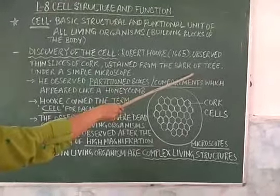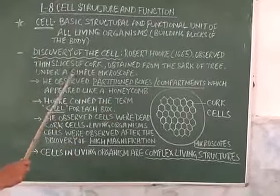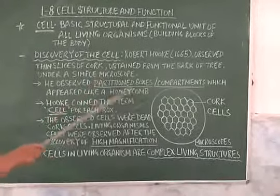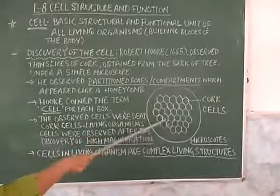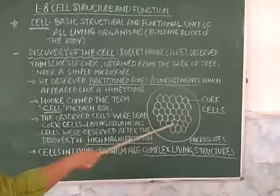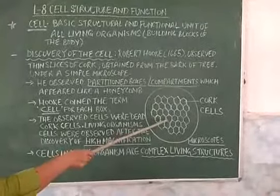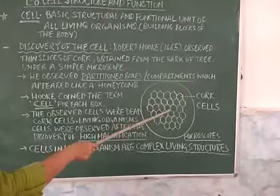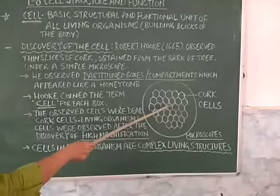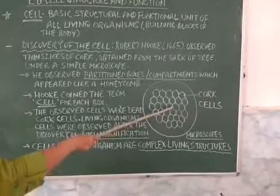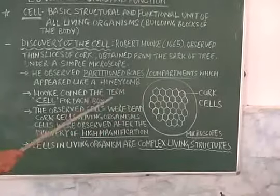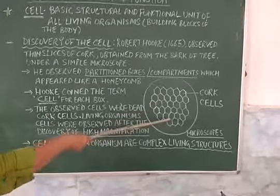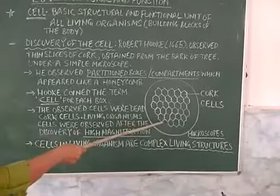He studied the cork cells under a simple microscope. He observed some partitioned boxes or compartments which appeared like a honeycomb, and each of the partitioned boxes or compartments had walls in between. So Robert Hooke coined the term cell for each box. The observed cells were dead cork cells.